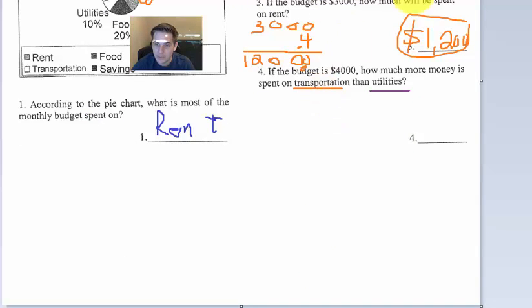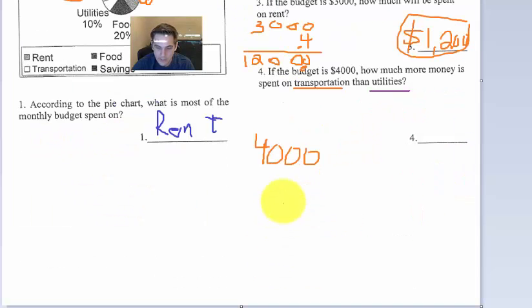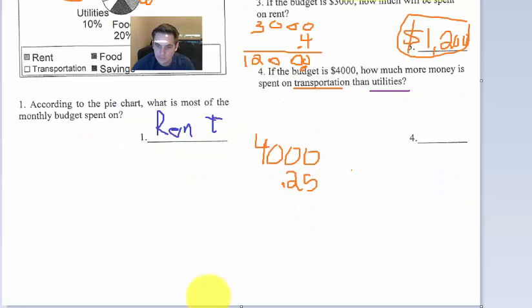So transportation, 4,000. And transportation is 25%. So just going fast, that's going to be 0.25, because twice to the left. So 0, 0, 0, 0, 5 times 4 is 20. Next row, pop a 0.